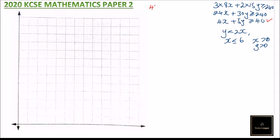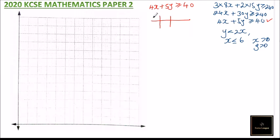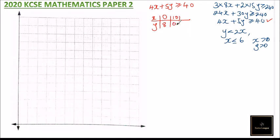Now we take the first inequality, 4X + 5Y ≥ 40, and make a table of values. When X is 0, Y = 40/5 = 8. When X is 10, Y = 0. When X is 5, 4×5 = 20, so 5Y = 20, giving Y = 4. We will use these three points to plot the line.